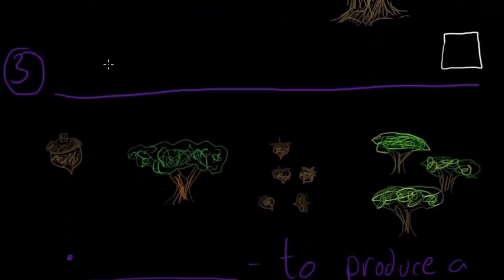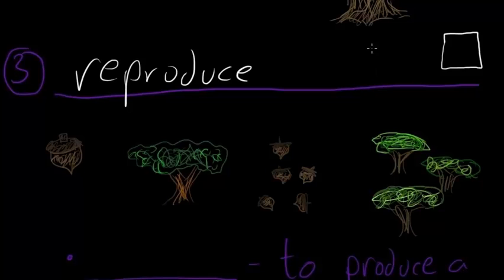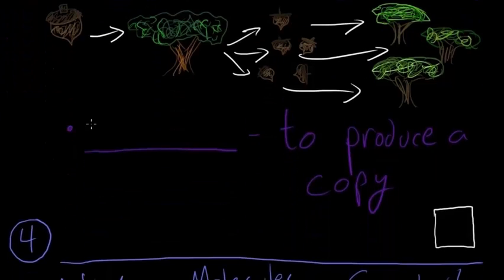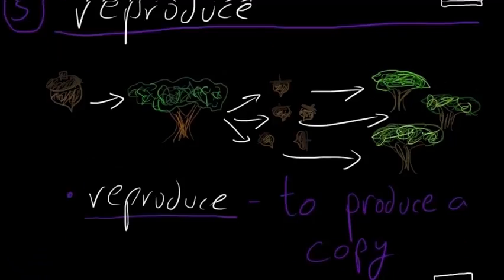Next we saw that all living things reproduce or produce offspring. We watched how an acorn can grow into a fully grown oak tree and then how that oak tree can produce many acorns and then how all those acorns can become trees if the conditions are right. To reproduce is to produce a copy and all living things reproduce.